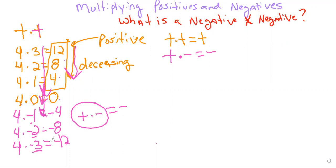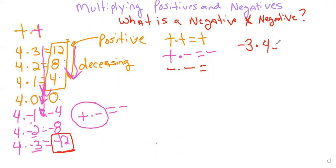Now we've got to get to the real answer: what happens if we have a negative times a negative? Let's use the rules we've already generated. Let's do negative three times four. Negative three times four is negative 12 — a negative times a positive gives us a negative. And negative three times three is negative nine, negative times a positive is negative.